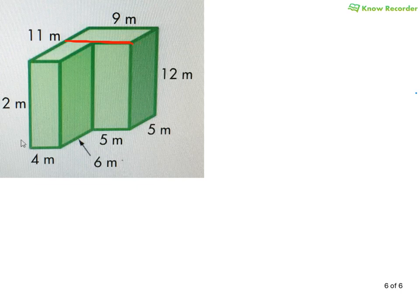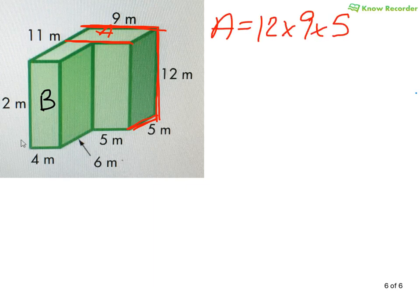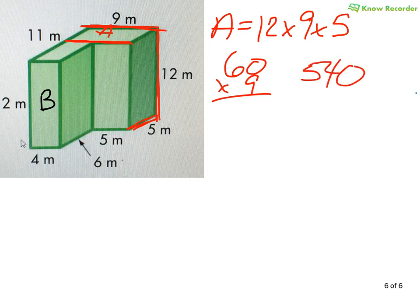I'm going to cut it here because this is where I like it. It's not the only way, and it might not be the best way for you — do what's good for you. For A, I need a length, width, and height. I have a length of 9, a height of 12, and connecting I have the 5. So A equals 12 times 9 times 5. 12 times 5 is 60, and 60 times 9 — 9 times 6 is 54, so that's 540. Pays to know your facts. Go on to extramath.org and get those facts.